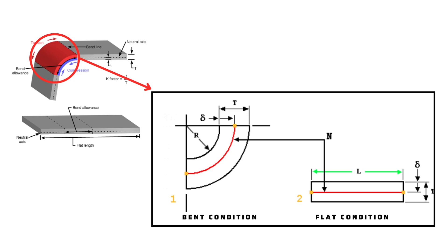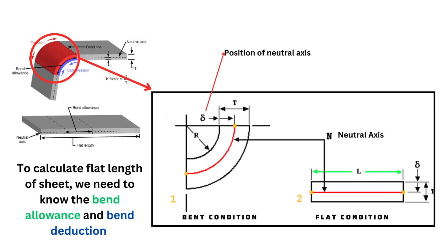In this condition you can see the red line shows the neutral axis, and the delta is the position of the neutral axis from the inside portion. Because of this bending, in the flat condition this length is important. This length is defined with the help of bend allowance and the bend deduction.